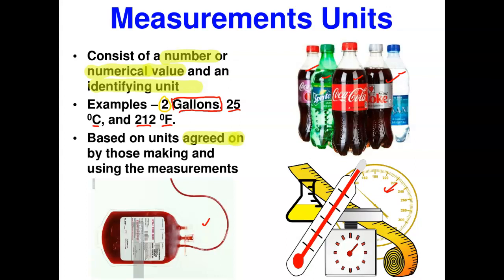There are two main systems of measurement. The first is the most universally accepted: the metric system, which uses a decimal system where larger and smaller units are represented by factors of 10. It is used widely in almost all parts of the world — except the United States.